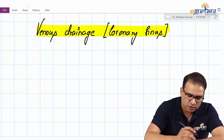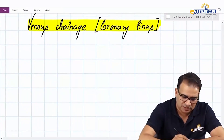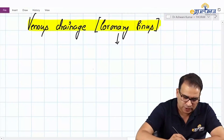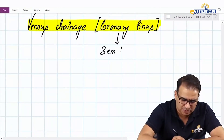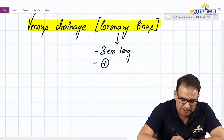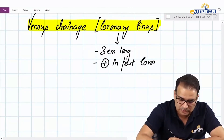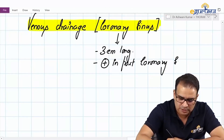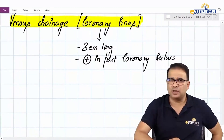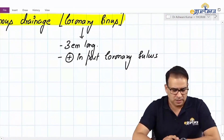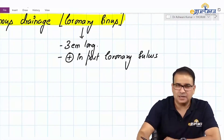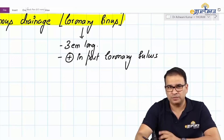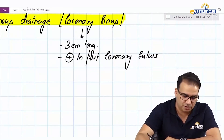A few things about the coronary sinus before we look at the diagram and its tributaries. The coronary sinus is approximately three centimeters long and is situated in the posterior coronary sulcus — also called the posterior atrioventricular groove. Both terms refer to the same structure.